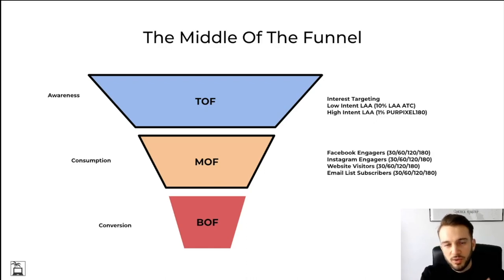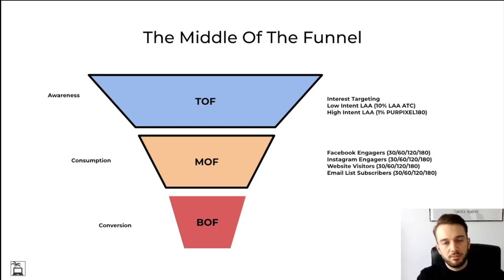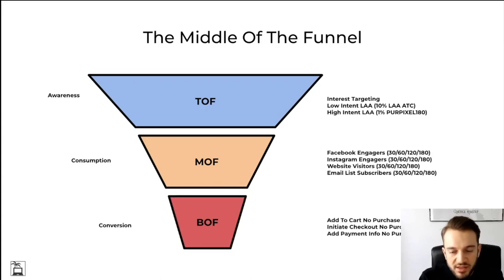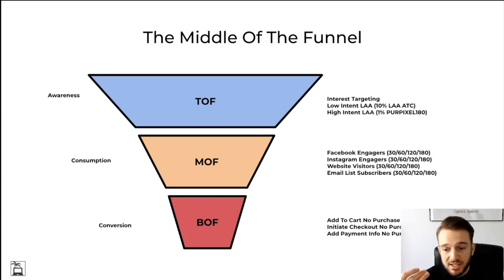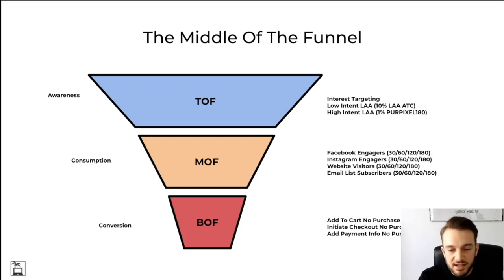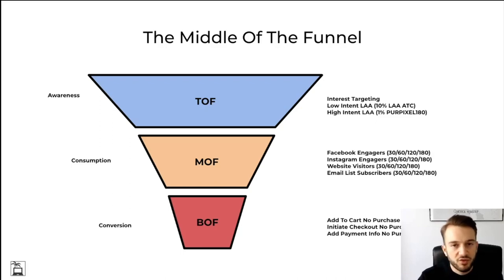For the email list, I usually just upload the static lifetime list, but if the audience and store is big enough you can upload new subscribers from the last 30 or 60 days specifically. For the bottom of the funnel, we retarget people with a catalog sales campaign who have added to cart but haven't purchased, initiated checkout but haven't purchased, or added payment info but haven't purchased — again depending on the size of the store. If you're doing less than 100k a month, just stick to add-to-cart but haven't purchased.